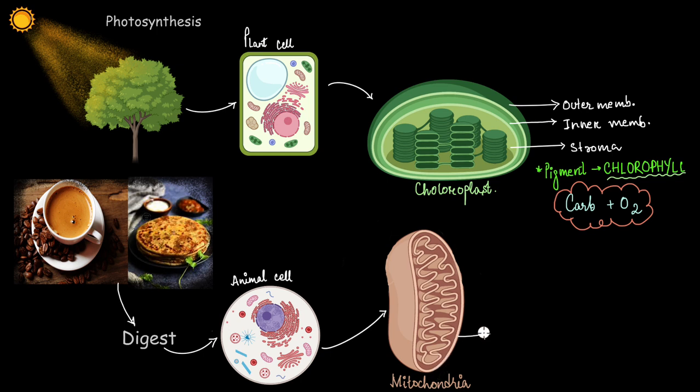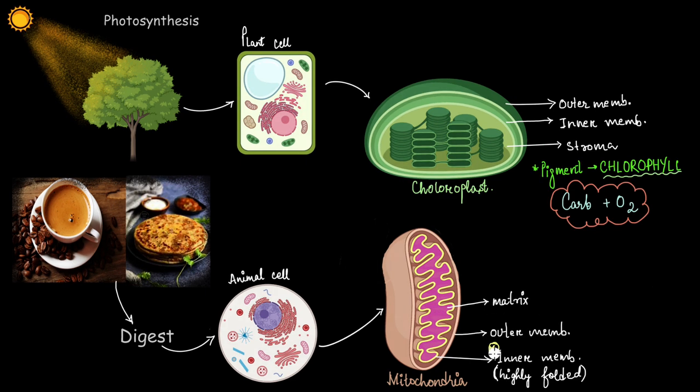Just like chloroplast, it has two membranes, the outer membrane and the inner membrane. But the difference here is that the inner membrane is extremely folded. And the part inside the inner membrane, let me do the inner membrane with a different color. The yellow one is the inner membrane and the part inside which I have made in pink is called the matrix.